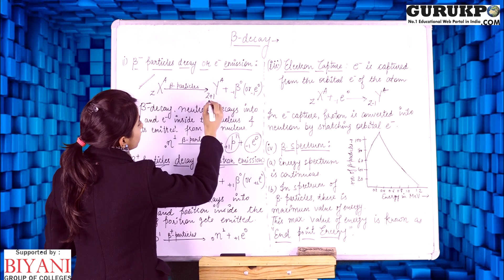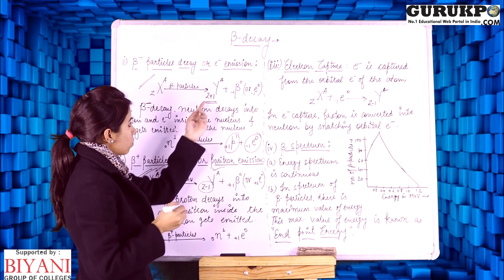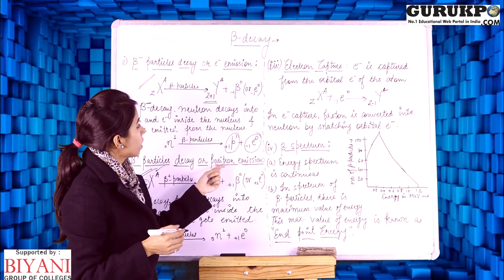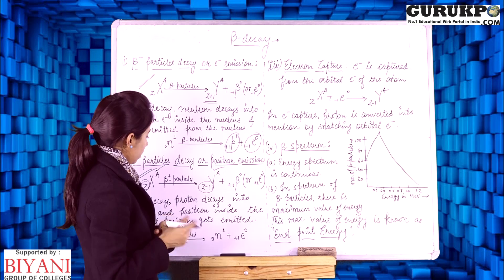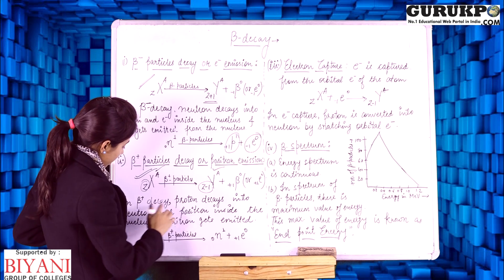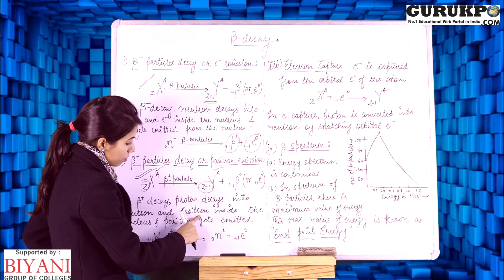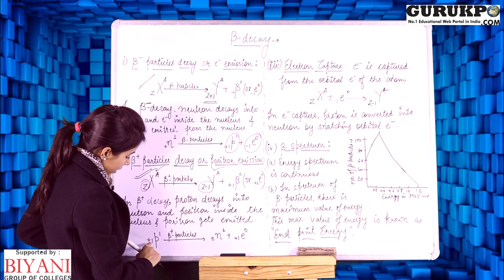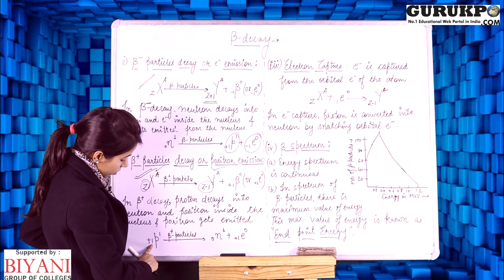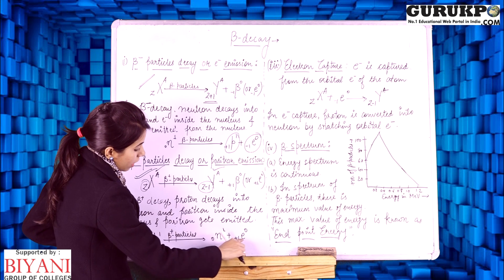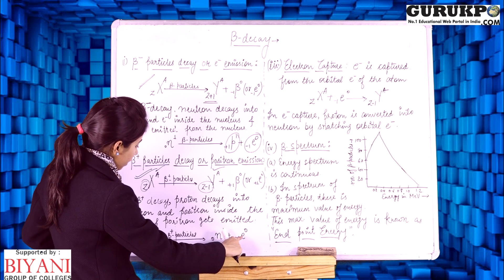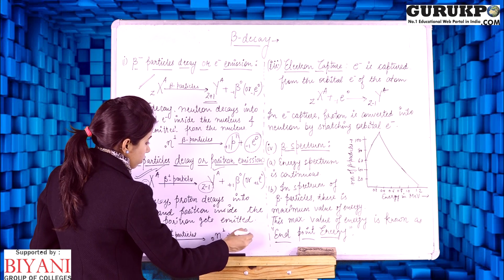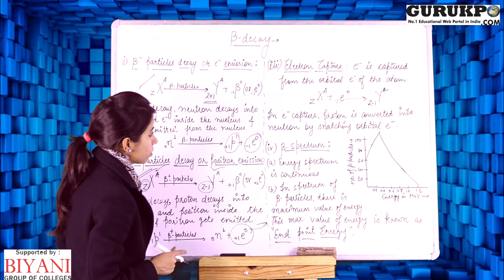In beta minus decay, the atomic number increases by one, so the new element formed will have its position one step forward in the periodic table. In beta plus decay, the proton decays into a neutron and a positron inside the nucleus, and the positron gets emitted out.